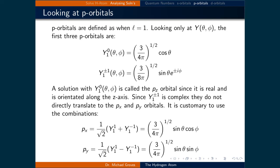The p_y orbital is defined as 1 over the square root of 2 times Y_1,1 minus Y_-1,1, and that's equal to the square root of 3 over 4π sine theta sine phi.